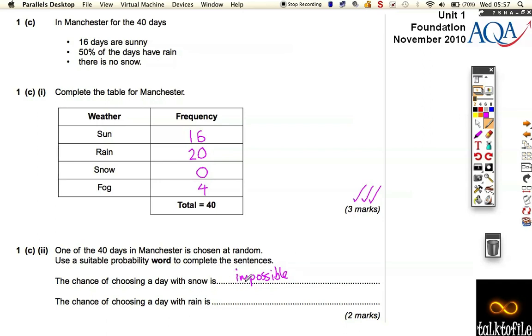And the chance of choosing rain must be... Well, rain is half of them, so there's a couple of phrases you could say. You could say 50-50 is a good one, which is exactly half, isn't it? So 50-50 is the chance of choosing a day with rain. So it's one mark for each of those. I think that's a nice question to start the exam paper off.